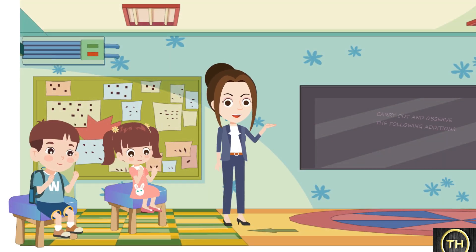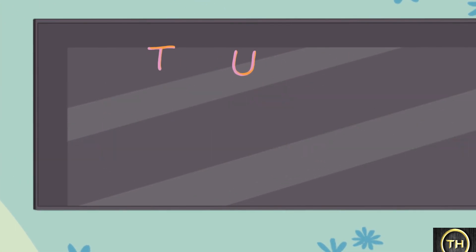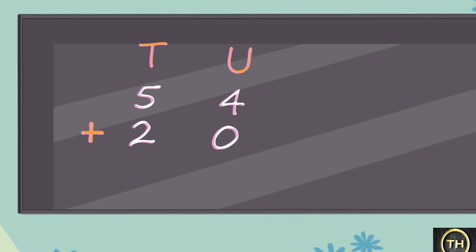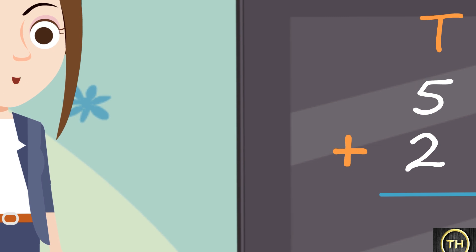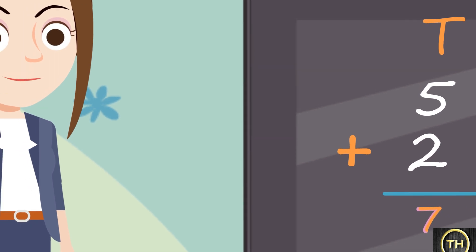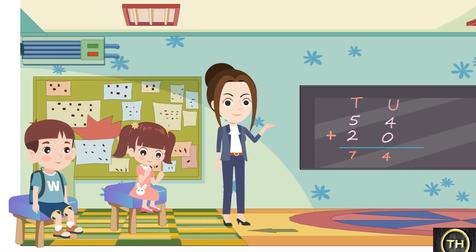Let us carry out and observe the following additions. 54 plus 20. We will begin this addition from the units place. 4 plus 0 is 4. Now the tens place: 5 plus 2 is 7. So the answer is 74.